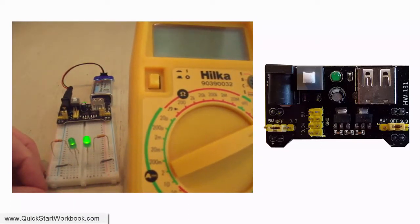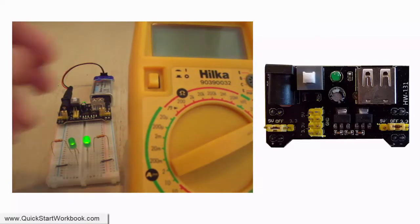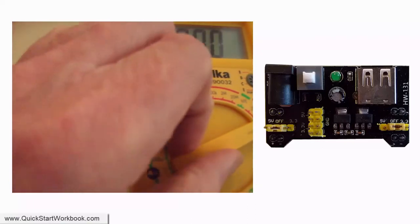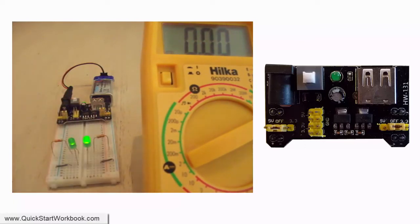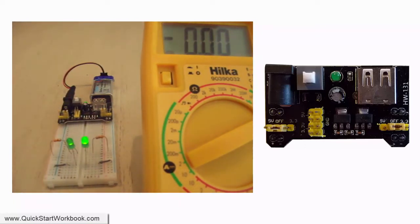You can see that the LED on the left is less bright than the one on the right. The left one should be receiving 3.3 volts, while the one on the right should be receiving 5 volts. Let's see what voltage they are actually receiving.